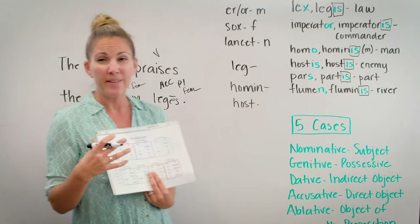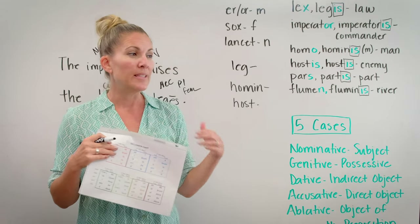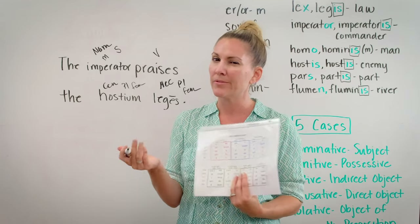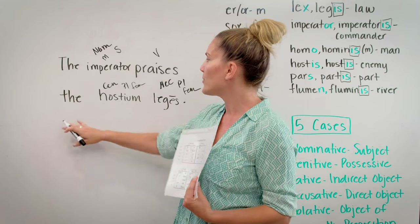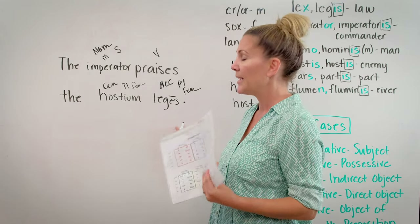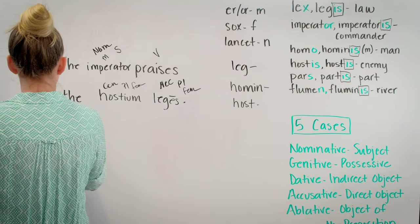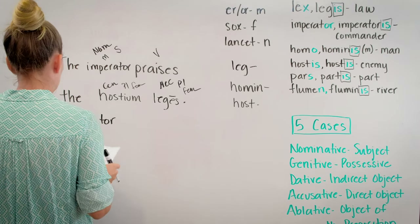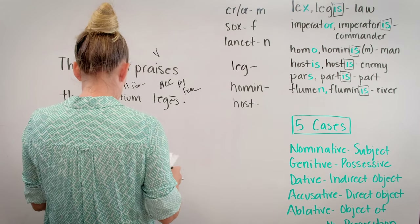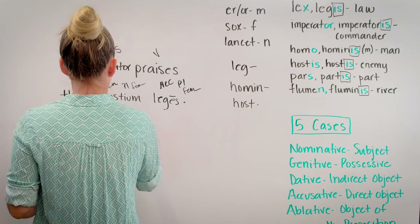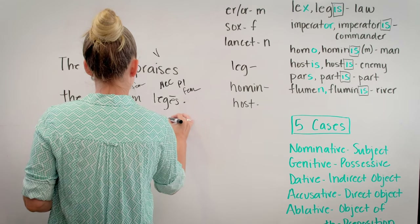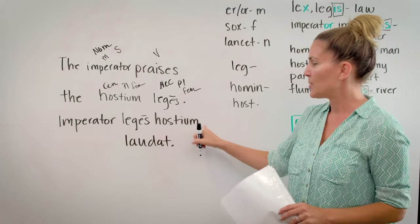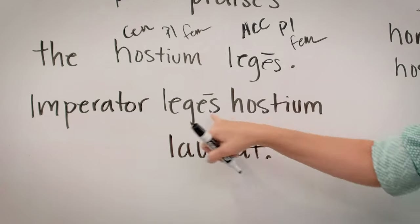Now, if I was really going to write this the way it appears in Latin, Latin does tend to have a pattern: subject, object, verb — generally, not always. If I was going to write this the Latin way, I'd start with the subject: 'imperator.' Remember, the verb comes last. Now we put the direct object first because, technically, they would say 'the laws of the enemy.'